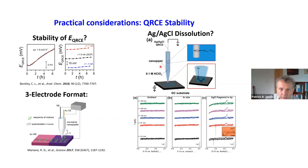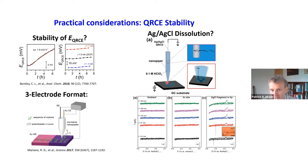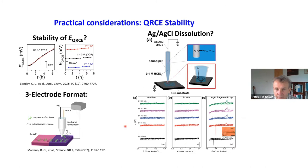We can pass pretty large current densities in this technique without worrying about ohmic effects, provided we have plenty of supporting electrolyte to carry the current. An important consideration is the quasi-reference counter electrode — it's large so there's no charge transfer resistance, but we need to think about what might happen to it over time. Cameron Bentley did beautiful experiments a couple of years ago, showing that under various conditions you can image for long times without any issues of this kind.